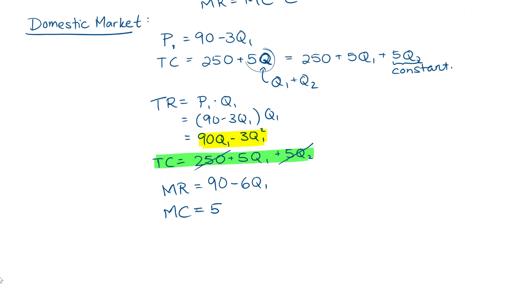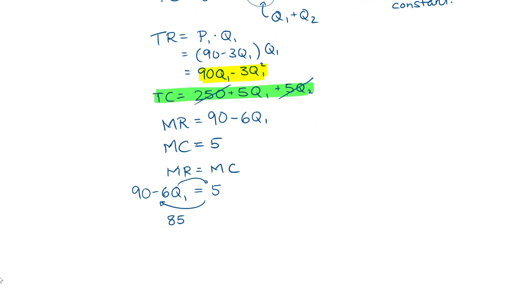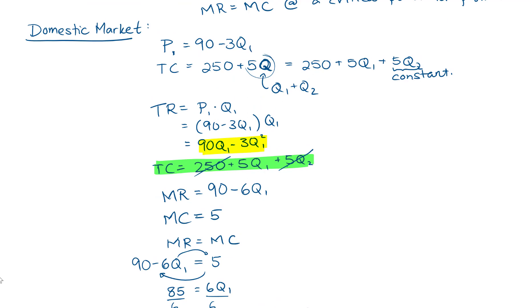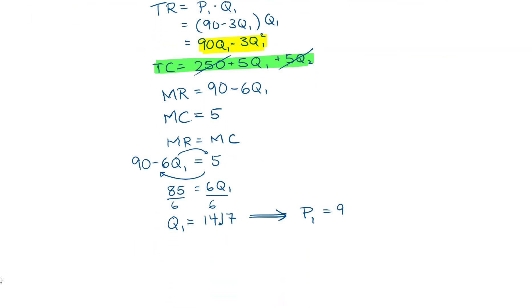Setting marginal revenue equal to marginal cost to find the critical point: 90 minus 6Q1 equals 5. Rearranging, 85 equals 6Q1, and dividing both sides by 6 gives Q1 equals 14.17. The associated price P1 equals 90 minus 3Q1, so P1 equals 90 minus 3 times 14.17, which gives a price of 47.50.